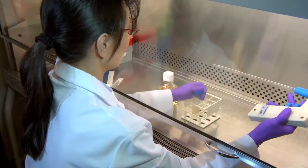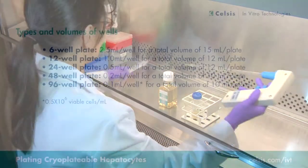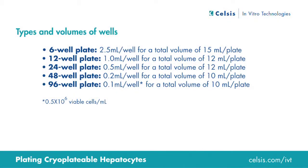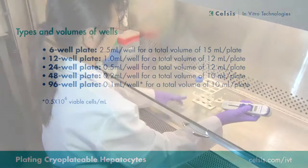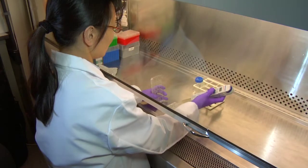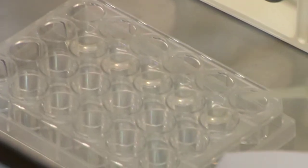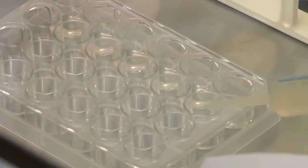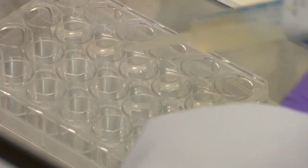The cells are now ready to be plated. Typically, cryoplatable hepatocytes are plated on collagen-coated plates. Other matrices like Matrigel can be used. The volume for each well will depend on the plate format you use. For induction, a 24-well plate is commonly used with 0.5 milliliters of cells aliquoted per well.